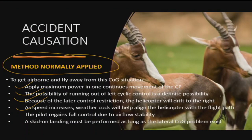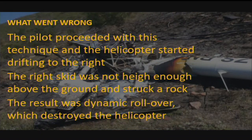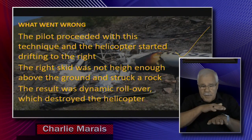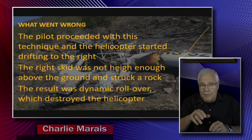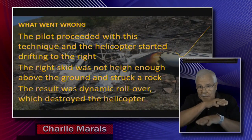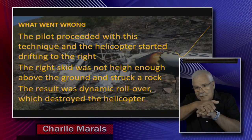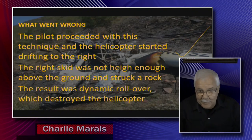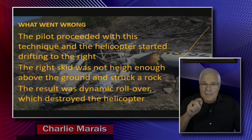So what went wrong? He proceeded with the technique and started drifting to the right — up to that point there was no problem. But the critical issue is: the moment you start drifting over the ground and the skid touches anything, you're going to get a dynamic rollover. That is exactly what happened here.